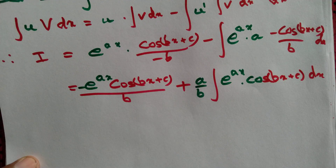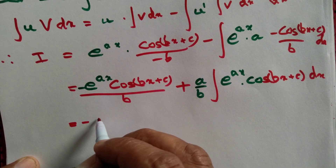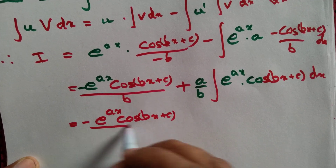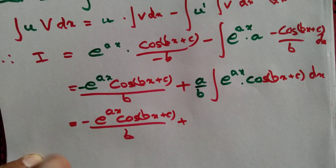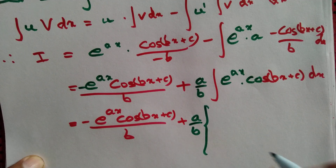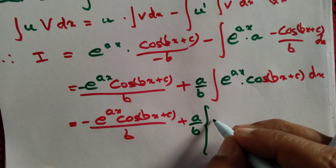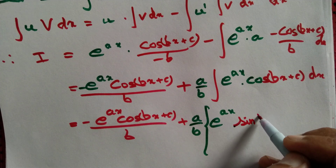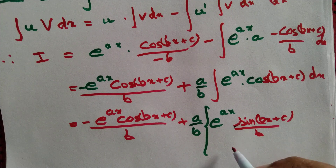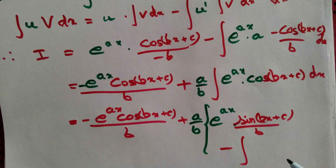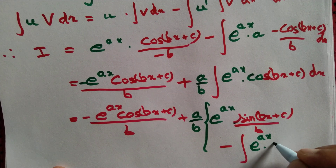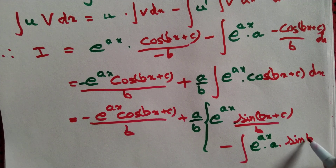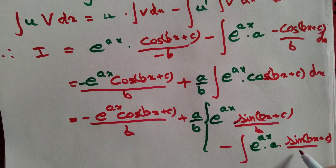We again have a product of two functions, so let's compute this once more. We copy the previous result as it is: minus e to the power ax times cos bx plus c divided by b, plus a by b. Again we apply the product rule: first function e to the power ax, times integral of cos bx plus c which is sine bx plus c divided by b, minus integral of derivative of first function — derivative of e to the power ax is e to the power ax times a — times integral of cos bx plus c, which is sine bx plus c divided by b dx.